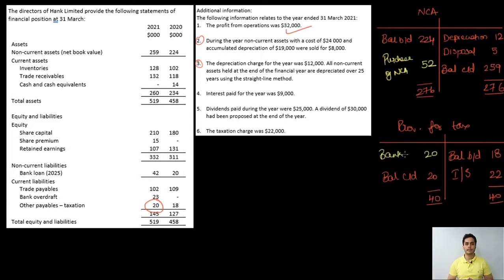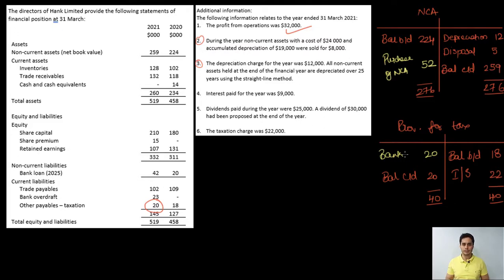The tax paid for the year works out to 20,000. Note: in a situation where adjustment six was not given, you would assume the closing balance of the provision for tax account (20,000) is the tax provided during the year, and the opening balance (18,000) is the tax paid during the year. That assumption is made only when there is no specific adjustment for tax — only the balance sheet item exists.